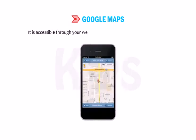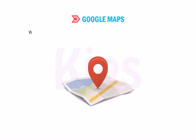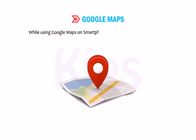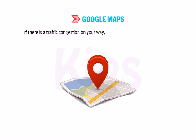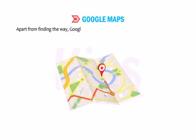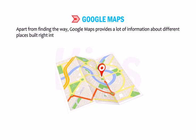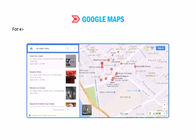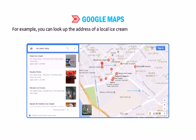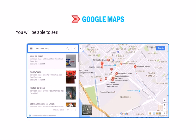Google Maps is accessible through your web browser or as an app for mobile devices. While using Google Maps on a smartphone, you get even better directions — if there is traffic congestion on your way, it will suggest an alternative route. Apart from finding the way, Google Maps provides a lot of information about different places built right into the map. For example, you can look up the address of a local ice cream shop by just searching for its name, and see even the closing time of the shop and grab a link to its website.